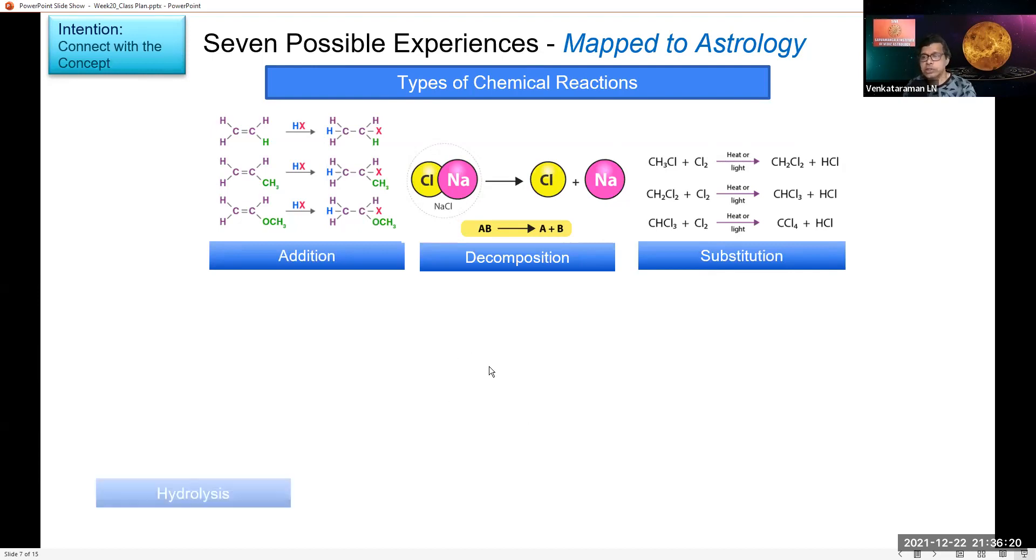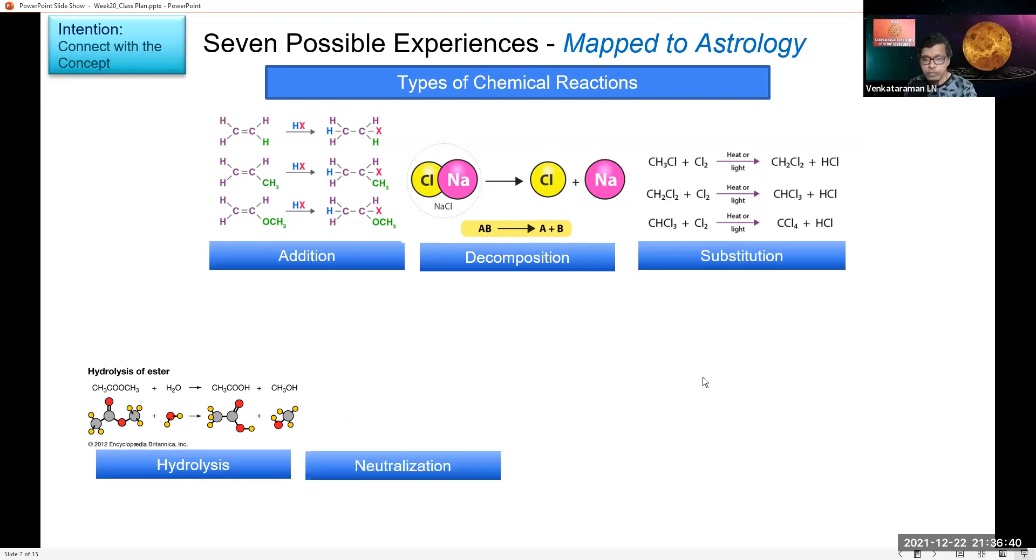Then we have hydrolysis. These are reactions when water is added under some conditions. Here there is hydrolysis of ester, basically leading to further byproducts from the same. You're getting acetic acid and methyl alcohol. Then next is neutralization. It's a very common thing - acid plus base giving salt plus water.